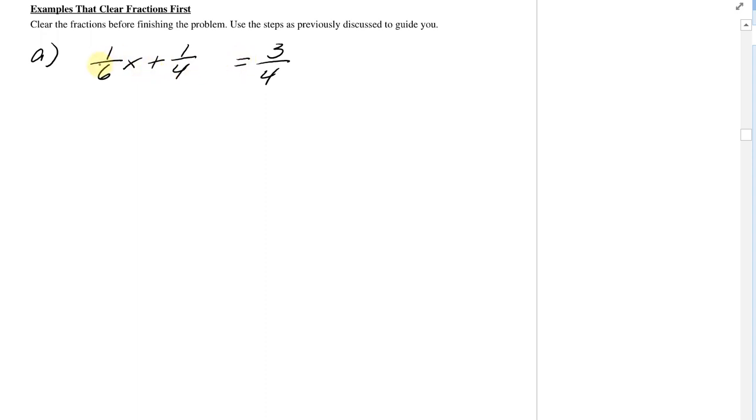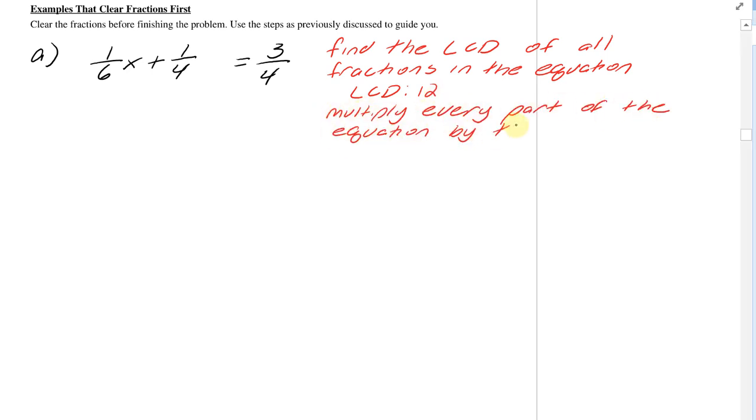The technique is that you want to look at all of the fractions in the equation and find the LCD of all fractions. In this case, that LCD would be 12. After you find that, then you want to multiply every single part of that equation by the LCD. I've left myself some intentional extra space. I want to go through and multiply each part of this by 12.